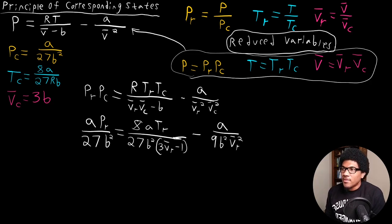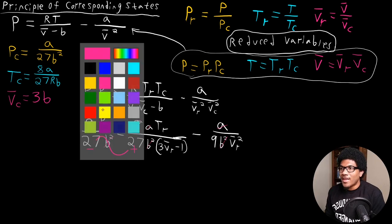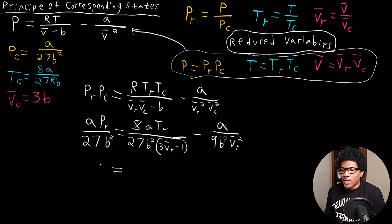So the biggest thing I want to point out here is that if you look at this expression, if we were to divide both sides by A, then that means these A's would cancel out algebraically, since you could factor out A here since it's in both terms. And the same thing happens for B squared. B squared cancels out since it exists in all terms. So what does that leave us with? When we do a little bit more algebra, we end up with the following expression. We get PR is equal to 8 TR over 3 VR minus 1 minus 3 over VR squared.